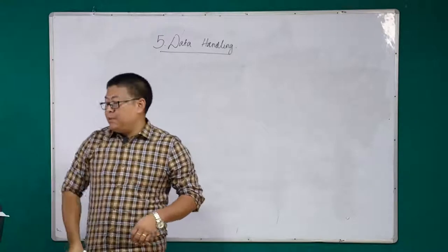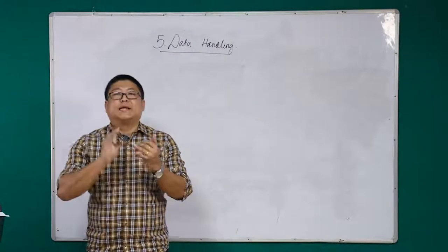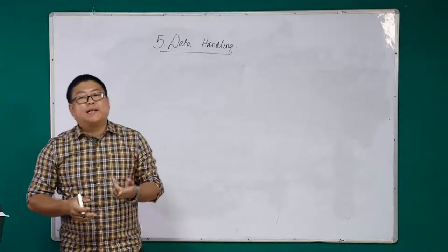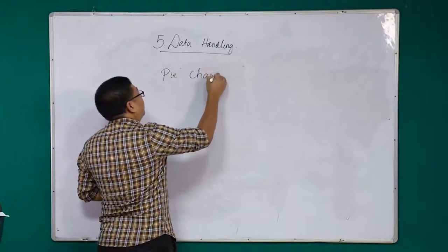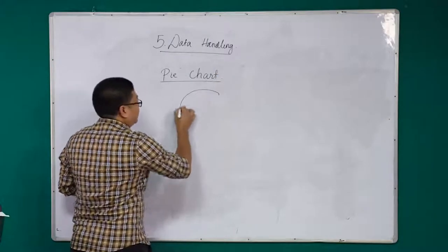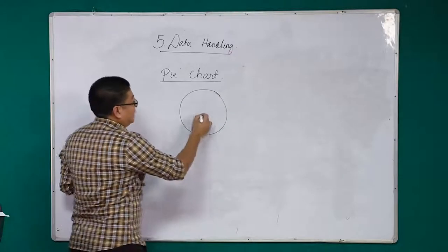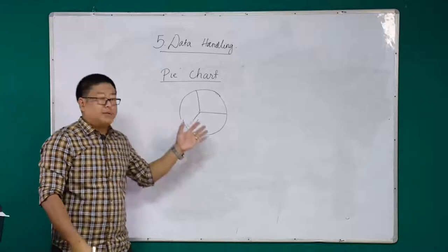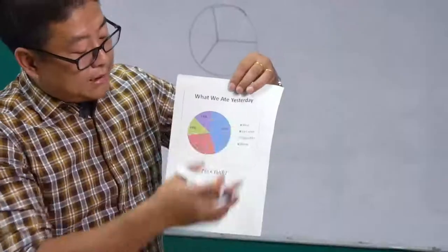So the graphs we have learned about are: first, pictograph; second, bar graph; third, double bar graph. The next thing we are going to learn is the pie chart. A pie chart is a circle representing data with slices. Let's have a look at an example of a pie chart.